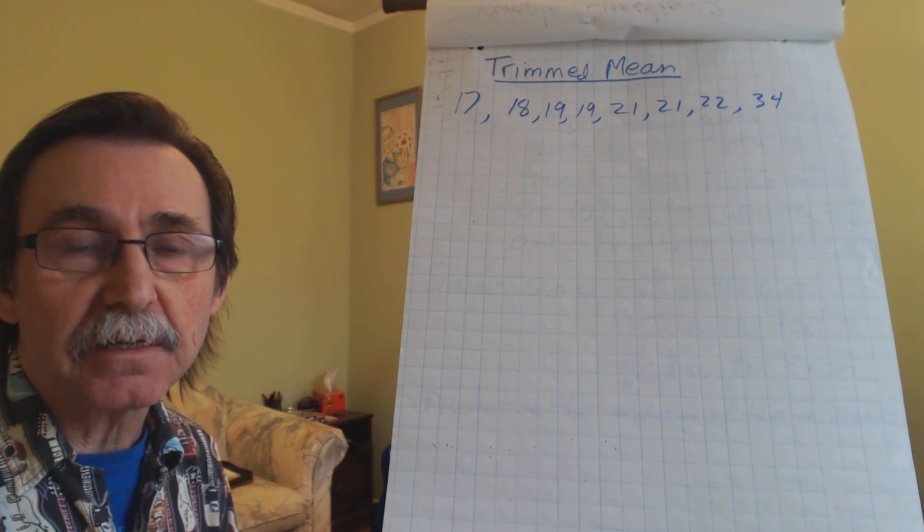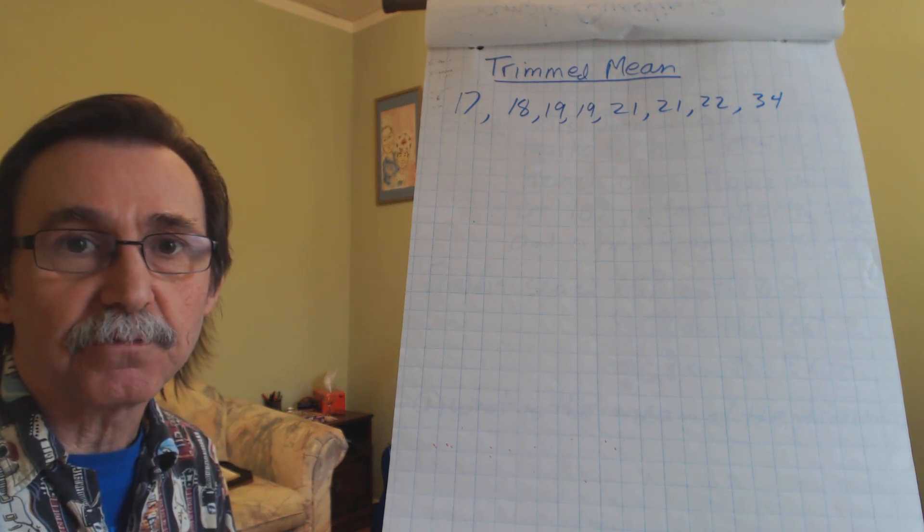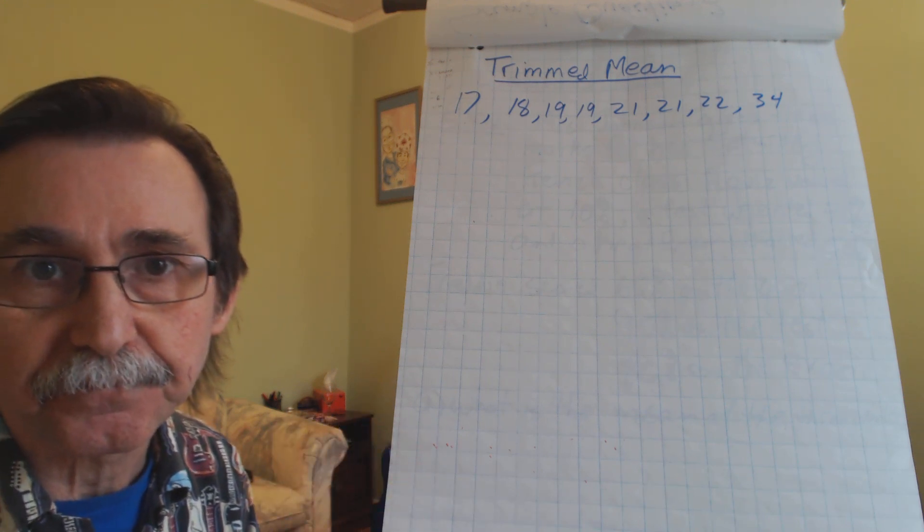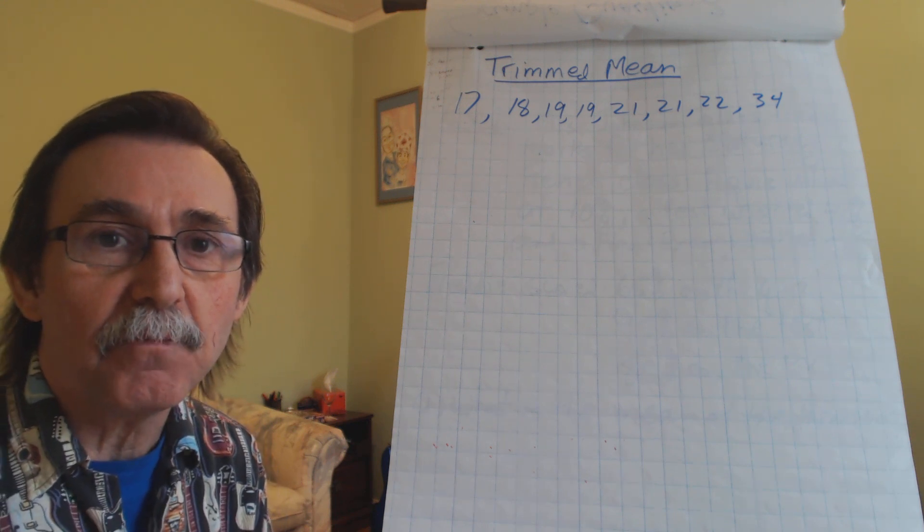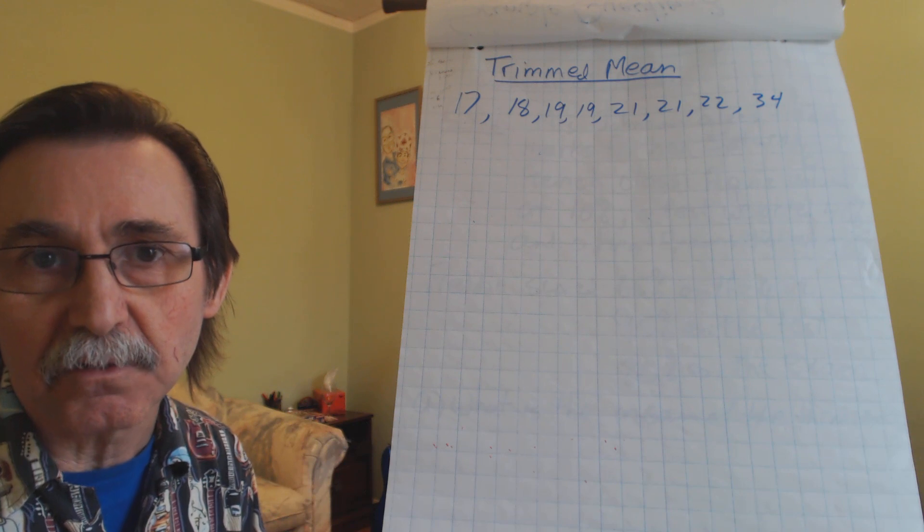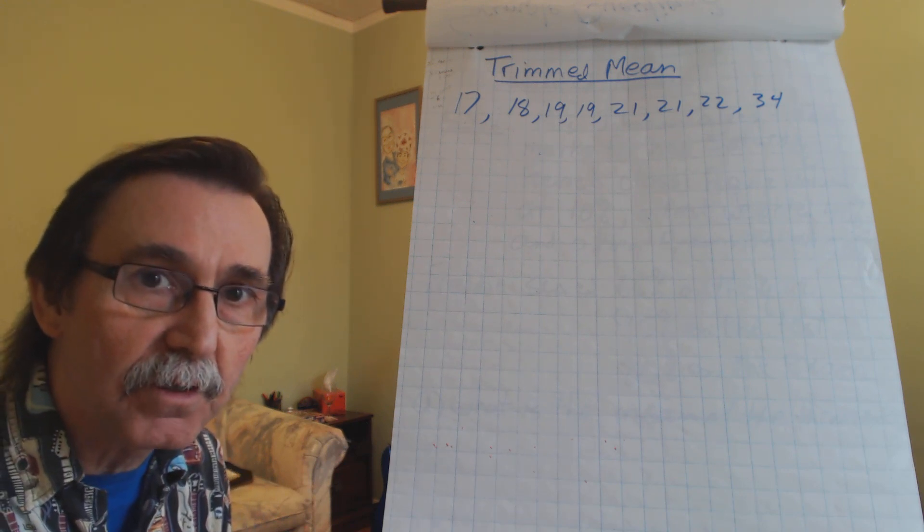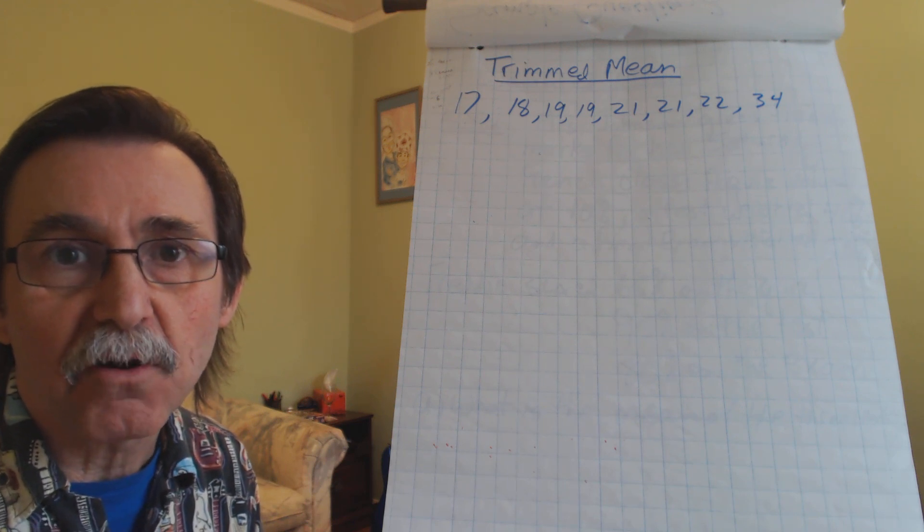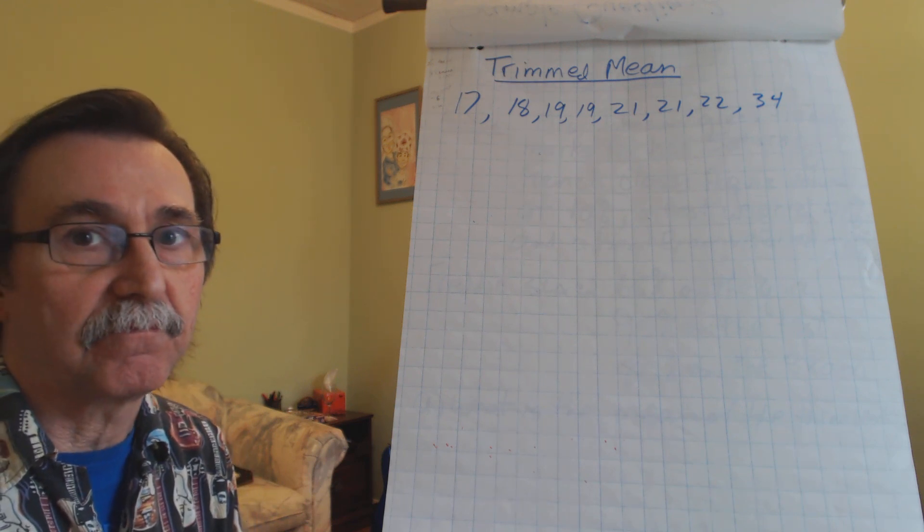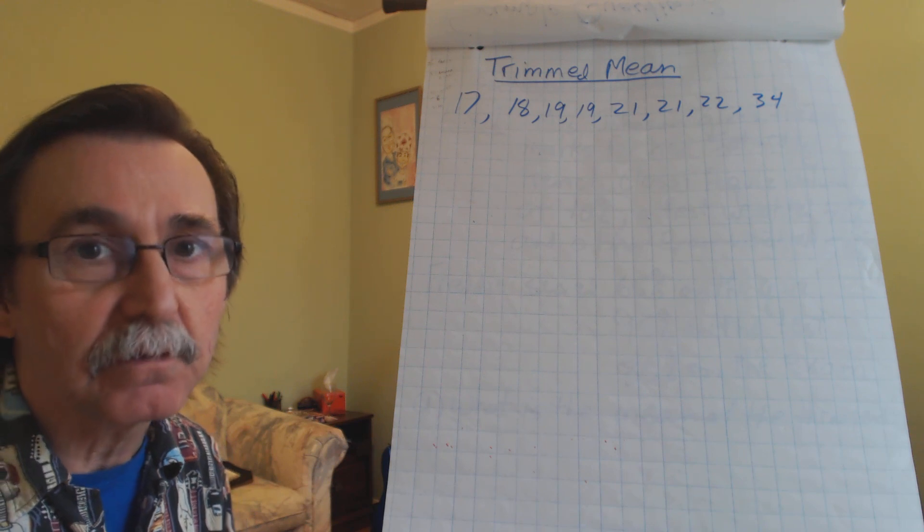So the trimmed mean is basically where you take a set of numbers, you look to see if there are any numbers that are unusual or that don't belong to that set or shouldn't normally belong to that set. We call those numbers that don't seem to fit in, we call those outliers.